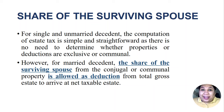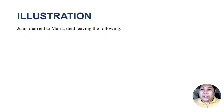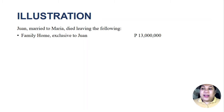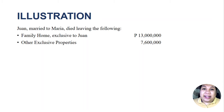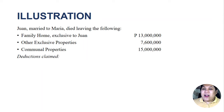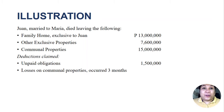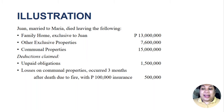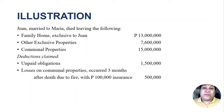To illustrate, Juan is married to Maria and died leaving the following properties: a family home exclusive to Juan valued at 13 million pesos; other exclusive properties at 7.6 million pesos; and communal properties at 15 million pesos. Deductions claimed include unpaid obligations of 1.5 million, and losses on communal properties that occurred 3 months after death due to fire — with an insurance recovery of 100,000 pesos, so only 400,000 pesos in losses are deductible.